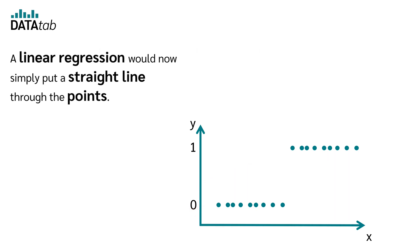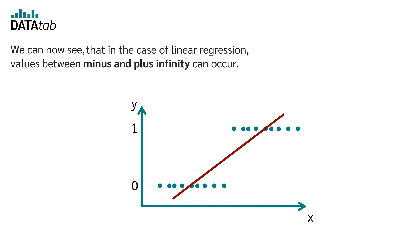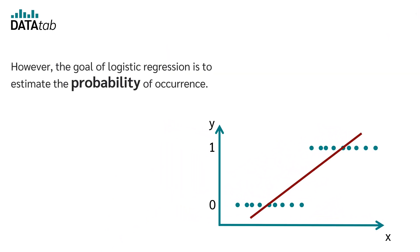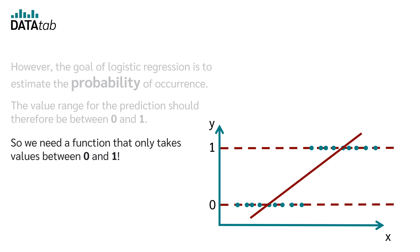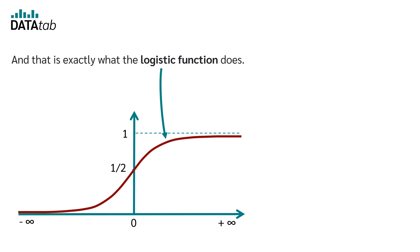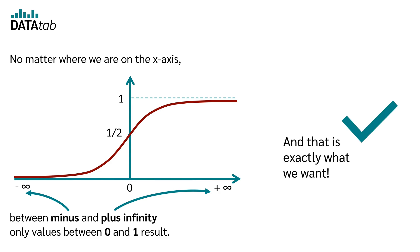A linear regression would now simply put a straight line through the points. We can now see that in the case of a linear regression, values between minus and plus infinity can occur. However, the goal of logistic regression is to estimate the probability of occurrence. The value range for the prediction should therefore be between 0 and 1. So we need a function that only takes values between 0 and 1. And that is exactly what the logistic function does.